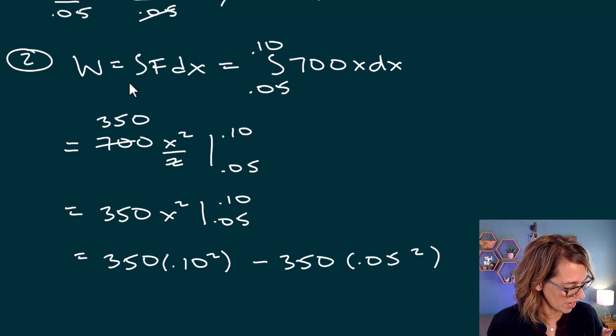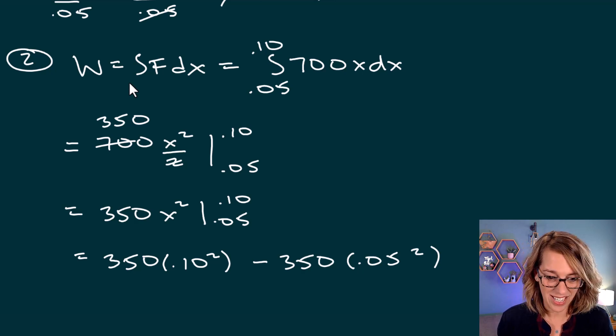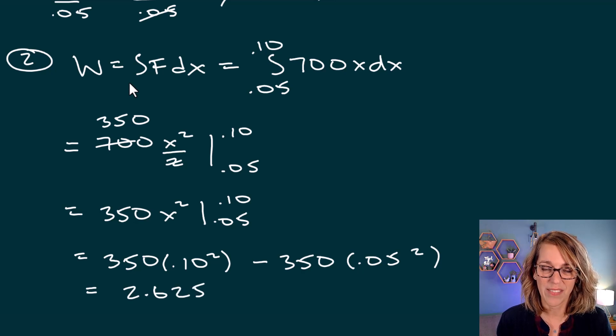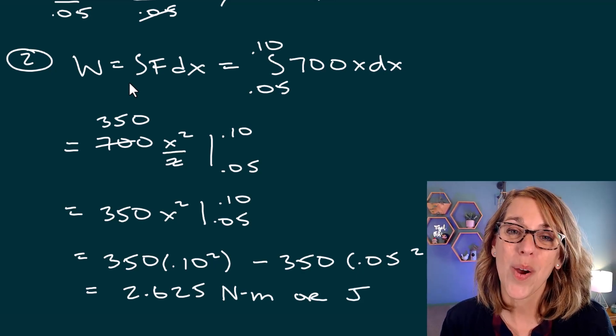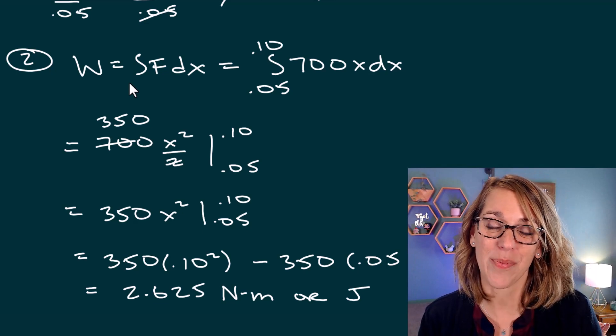And I end up with 2.625. So this is equal to 2.625. I made sure that all of my units were in meters. So this turns out to be 2.625 newton meters, or we could say the unit is simply a unit of joules. I hope this was helpful. Do take a look at the next one. You guys are doing great.